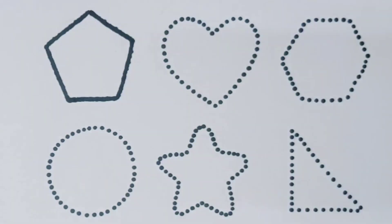First you're going to draw the shapes: pentagon, heart, hexagon, circle, and star.